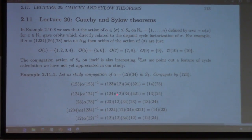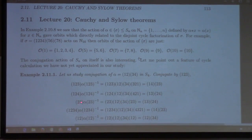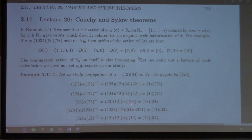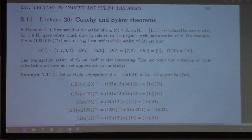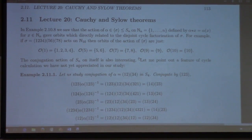Conjugate by (1,2,4): multiply these out to get (1,3)(2,4). Conjugate by (2,3): (2,3)(1,2)(3,4)(2,3) works out to (1,3)(2,4). You can easily check these; it's the usual cycle calculation.